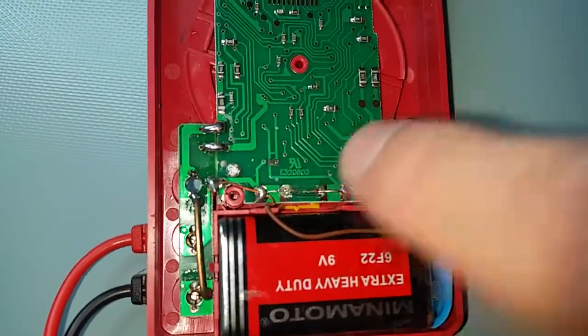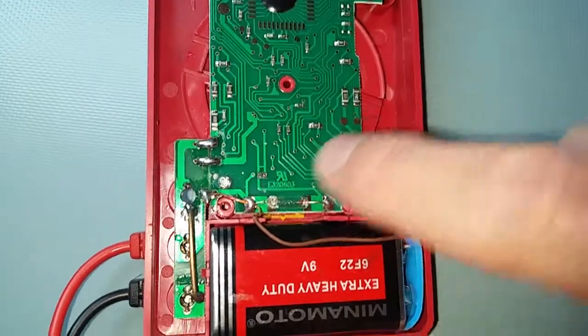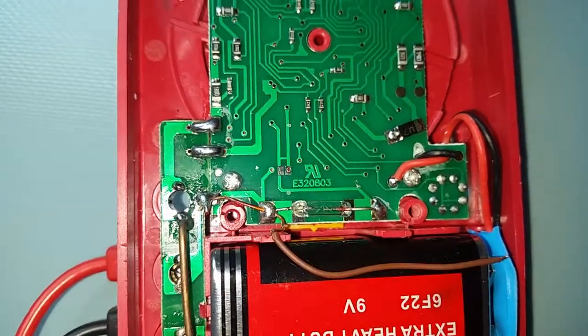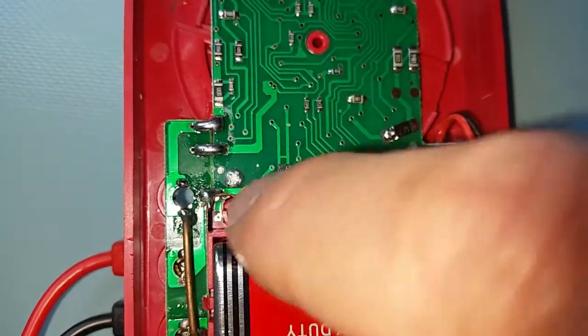This little circuit board here was taken from this piece here, and it's bridged by three solder joints. Unfortunately those solder joints snap when you push in the probes.